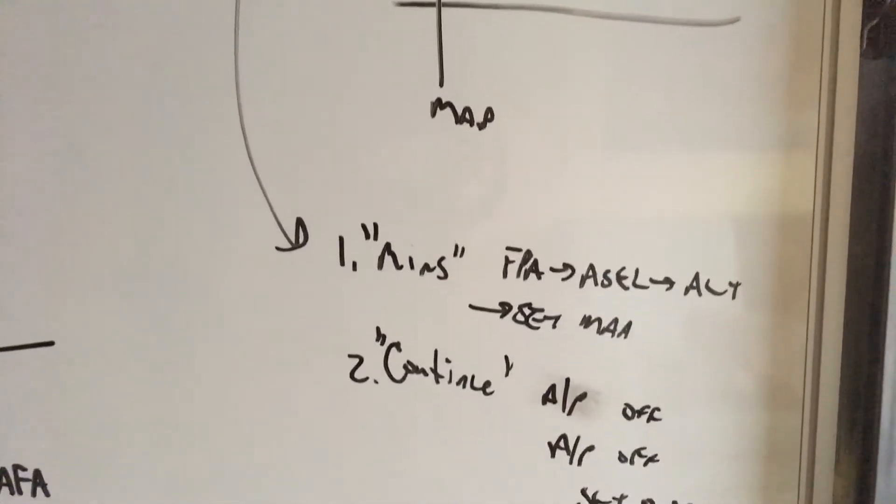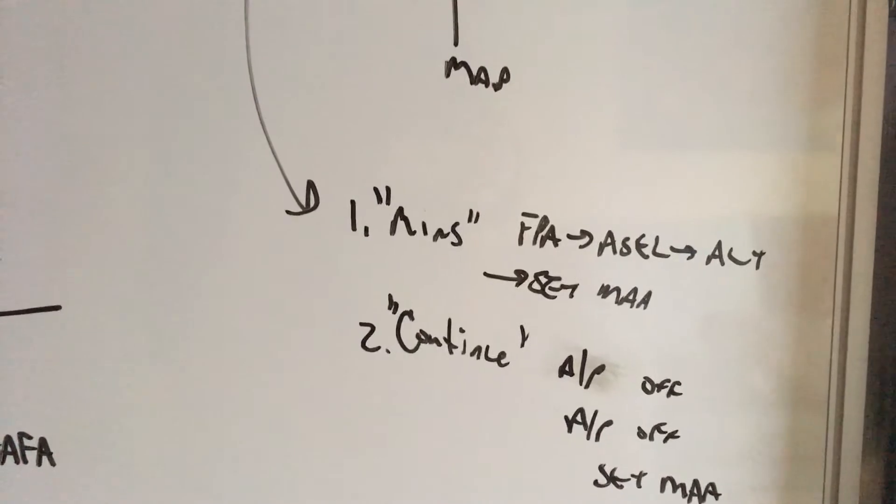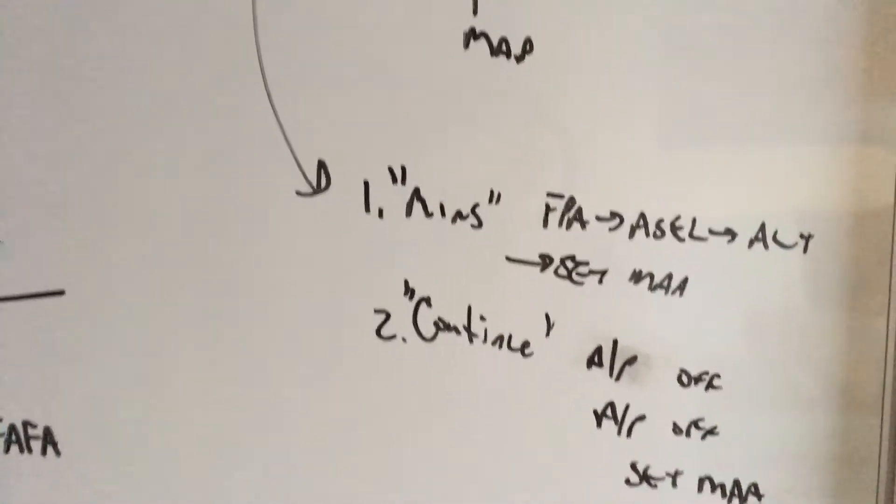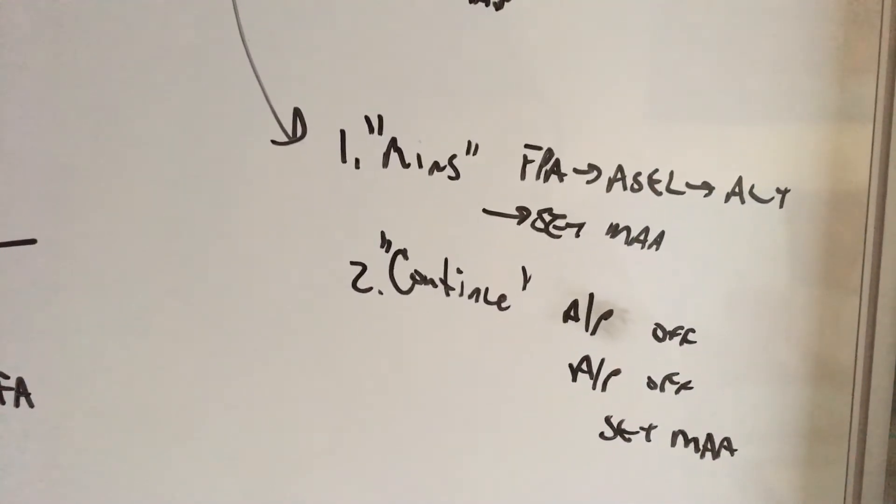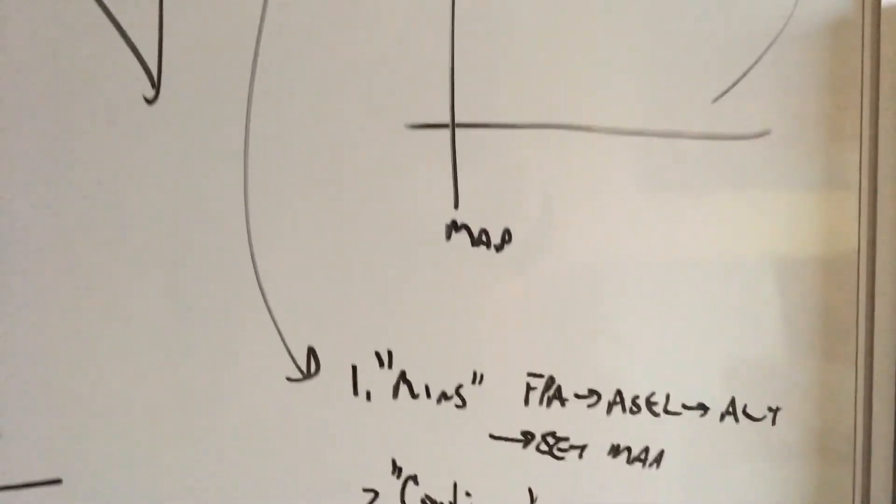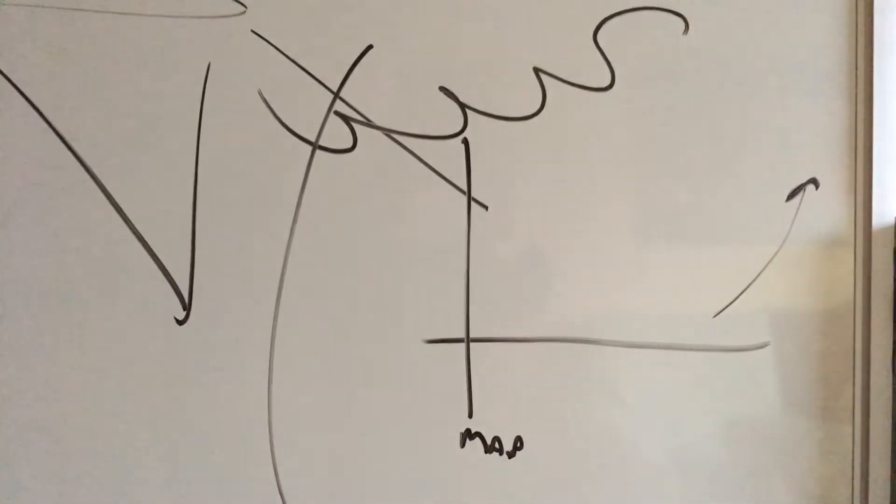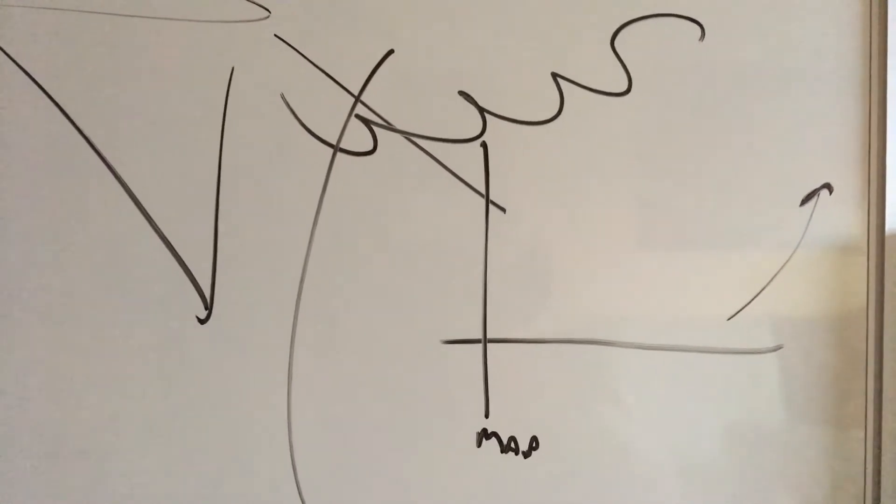If you hear continue, autopilot off, autopilot off, and ask your monitoring pilot to set missed approach altitude for you. Then you continue to the point you have to go missed, and when you do have to go missed...